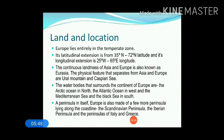As a peninsula in itself, Europe is also made of a few more peninsulas lying along the coast. A peninsula is a landmass that is surrounded by water on three sides — like the Deccan plateau, where the southern portion of India is a peninsula because it is surrounded by water on three sides. The important peninsulas of Europe are the Scandinavian Peninsula, the Iberian Peninsula, and the Peninsula of Italy and Greece.